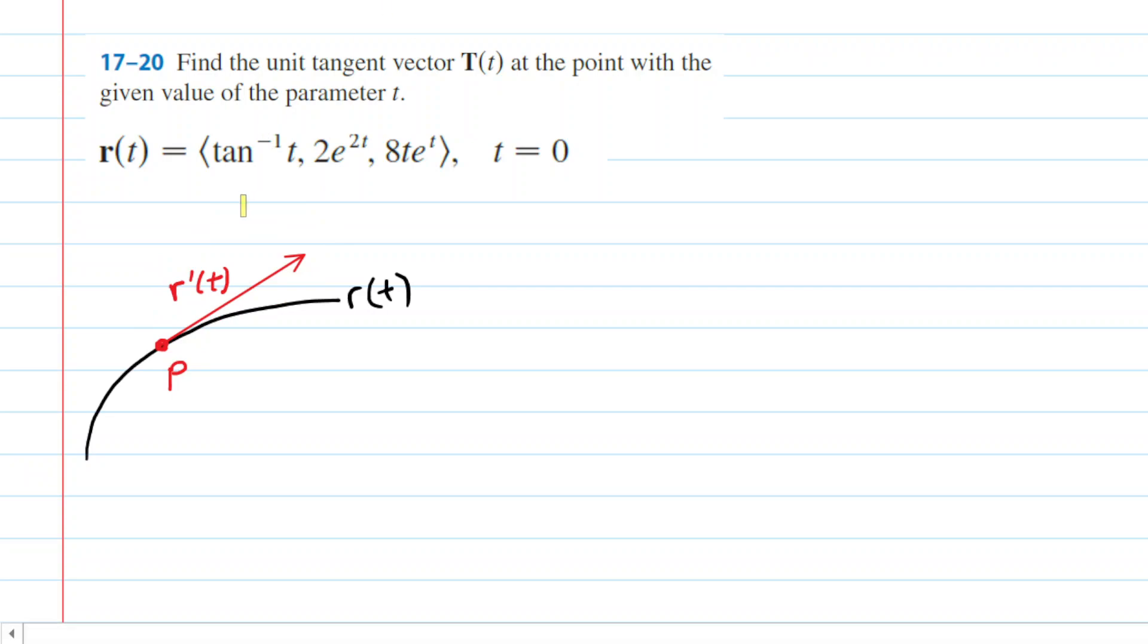So this r prime of t is a tangent vector. Now this question does not want us to find just the tangent vector, it wants the unit tangent vector. Recall that a unit tangent vector would be a vector that is pointing in the same direction as r prime of t, so in the same direction as the tangent vector. The only difference is that the unit tangent vector is going to have a magnitude or length equal to one. Remember, unit just means one in mathematics.